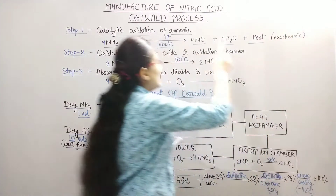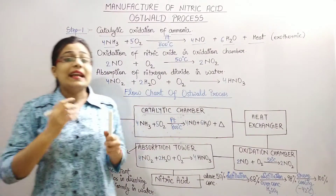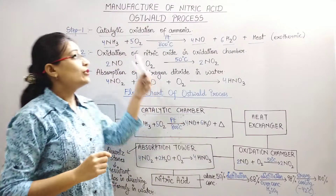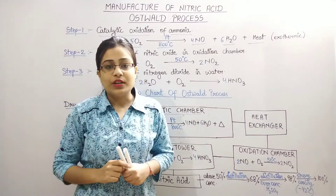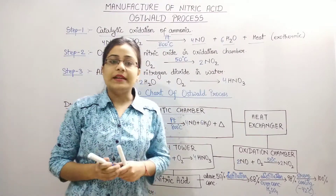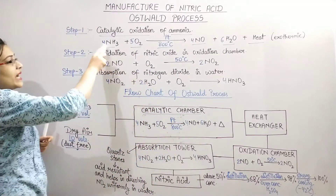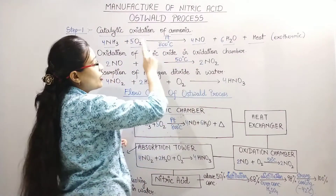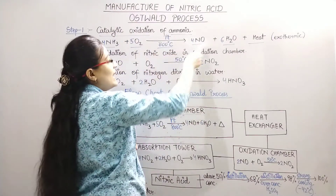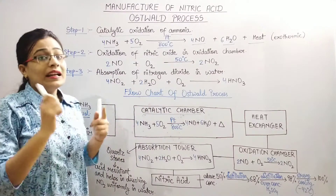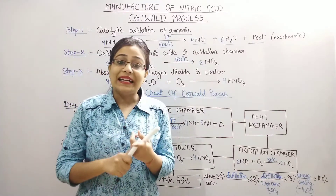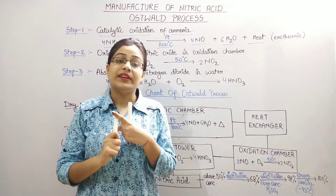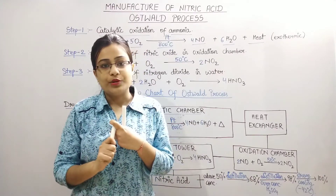So the first step is the Catalytic Oxidation of Ammonia. Ammonia gas is being oxidized to Nitric Oxide gas. The conditions used are: Platinum as a catalyst and a temperature of 800 degrees Celsius.